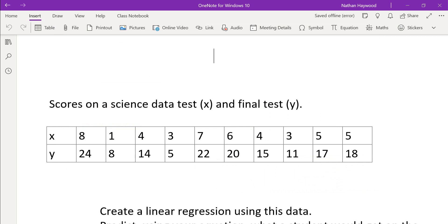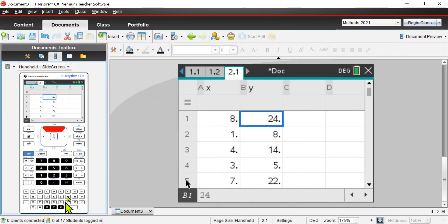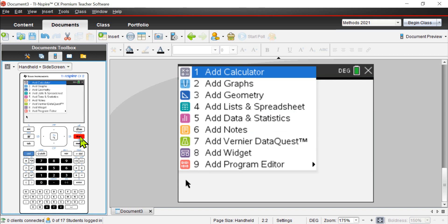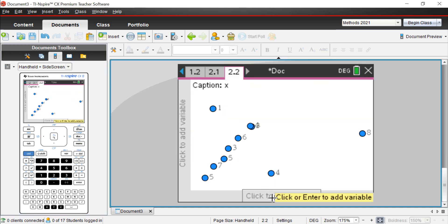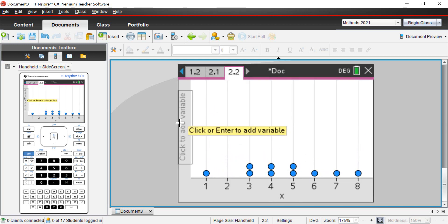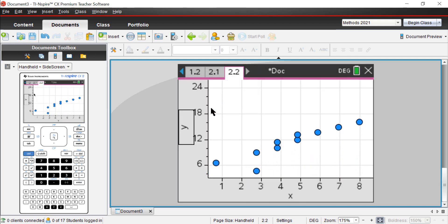We're going to do this thing called create a linear regression using this data. So you need to go control doc to insert a new page, data and statistics. The bottom one is the X, this one is the Y, and that's plotted a scatterplot of your data.